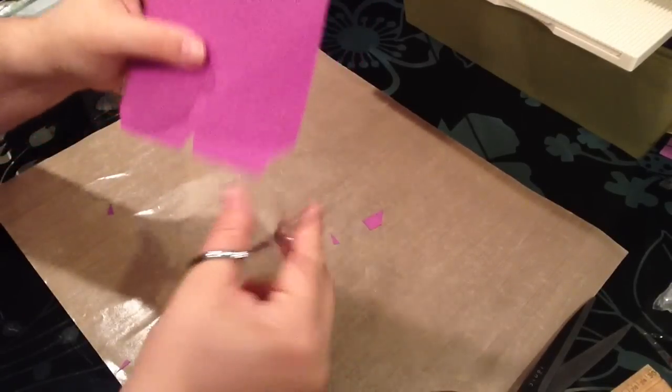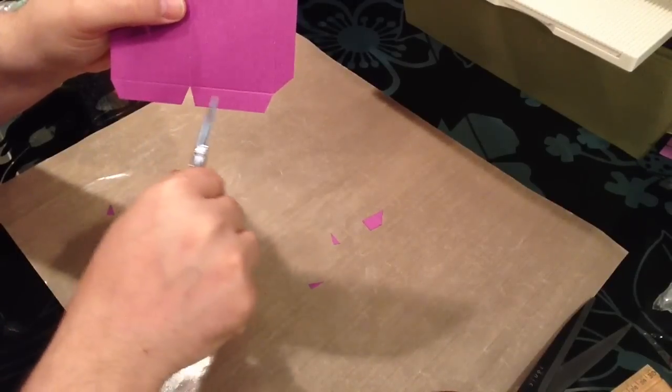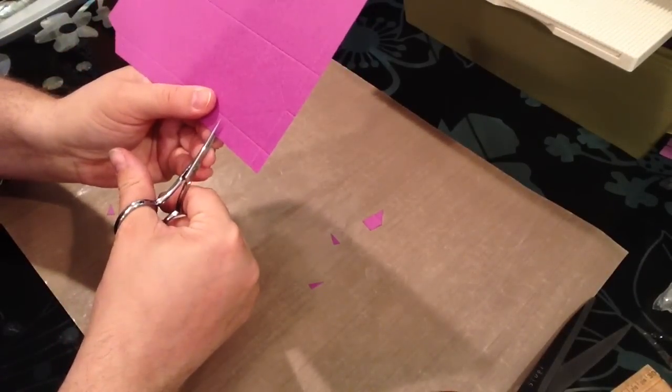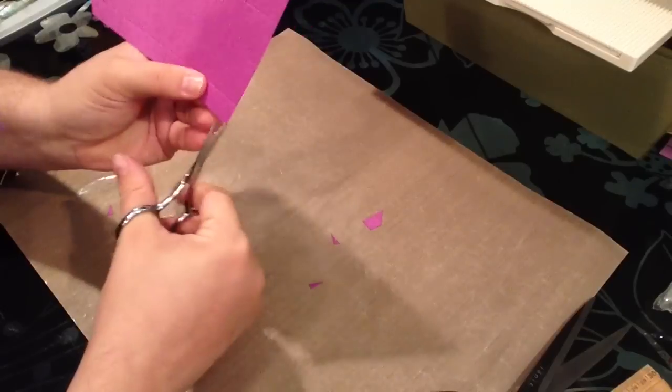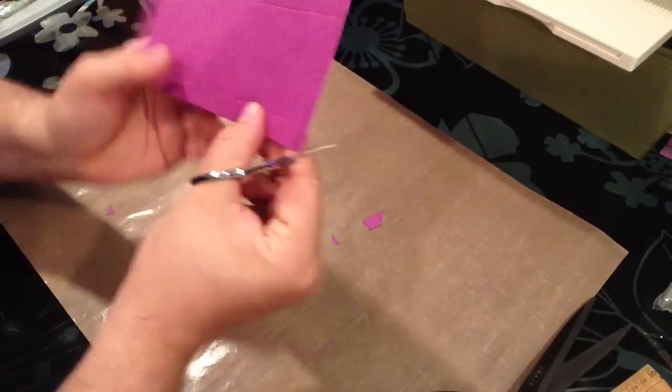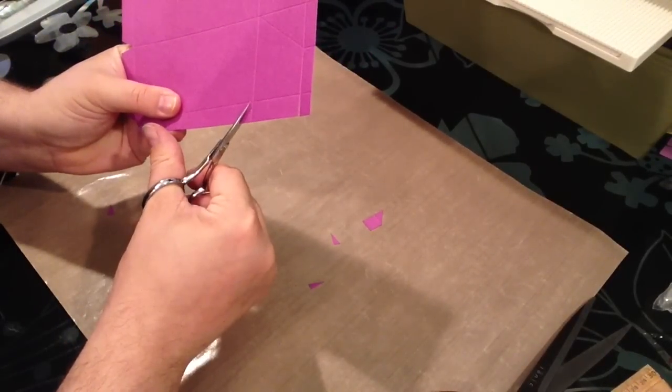These outside pieces we're turning into little tabs. This side piece we're going to do the same thing, so along just those little tiny pieces of lines I'm going to cut up and then cut a little notch out here.